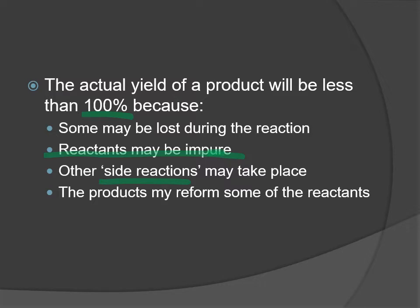Side reactions are another factor — you may think you're doing one reaction, but an alternative reaction may occur, or your products go through a different reaction so they're not your products anymore, bringing down your actual yield versus theoretical. We'll also look later at equilibrium, where some products may reverse through the reaction and reform reactants, which would reduce your actual yield and percentage yield.